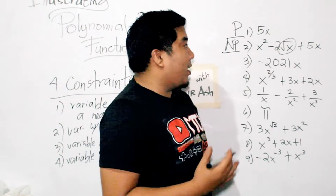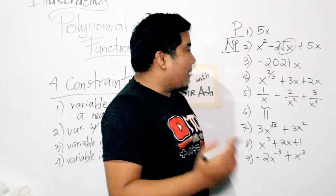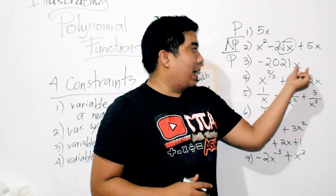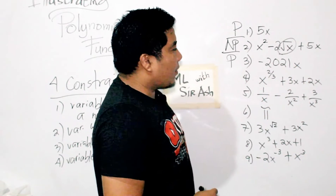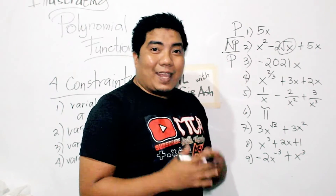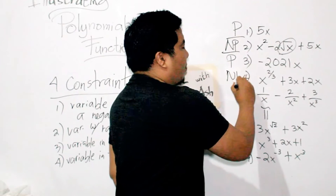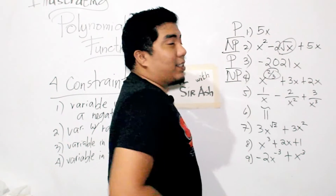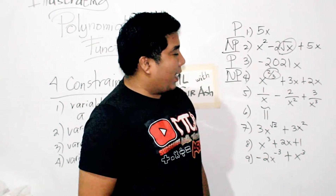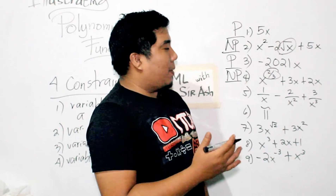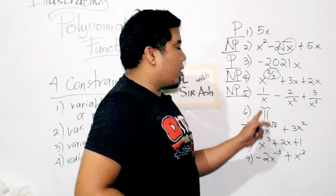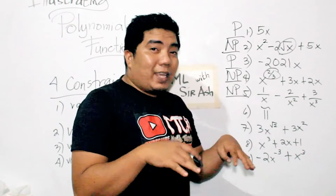Number three, negative 2021x — that is a polynomial because it's just an integer and a variable. Number four, x to the power of 2/3 plus 3x plus 2x — that is not a polynomial because the exponent 2/3 is a rational number. Number five, 1 over x minus 2 over x squared plus 3 over x cubed — that is not a polynomial because the variable is in the denominator side.